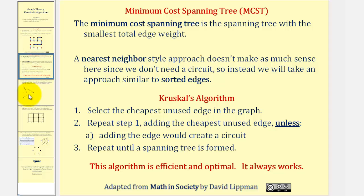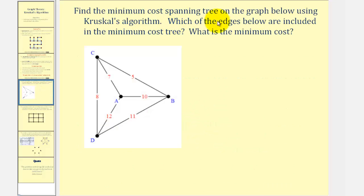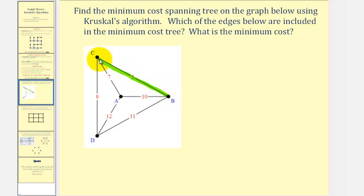Let's take a look at some examples. We want to find the minimum cost spanning tree on the graph below using Kruskal's algorithm — which edges are included and what is the minimum cost? We begin by selecting the edge with the least weight, which would be edge BC. Now we'll select the next cheapest edge as long as it doesn't form a circuit — that would be edge AC with a weight of seven. Next would be edge CD with a weight of eight.